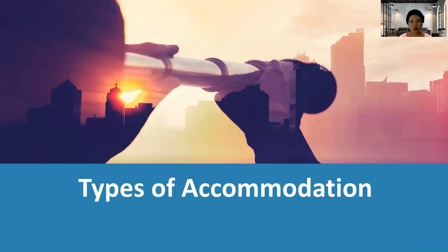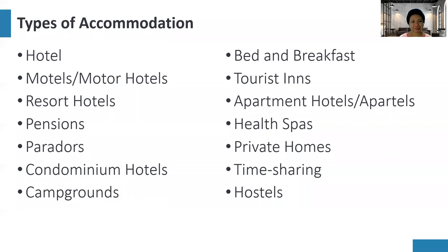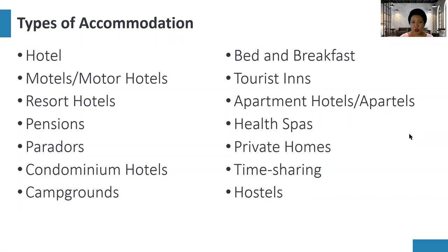Now let's go to the different types of accommodation. Hotels are usually the largest form of accommodation we can imagine. Hotels differ based on the type of operation and the type of market that they are accommodating.